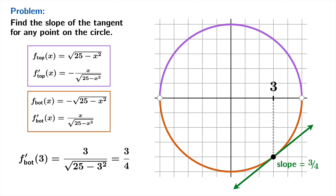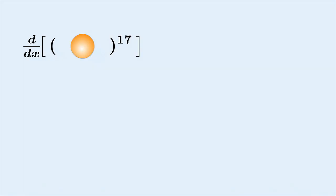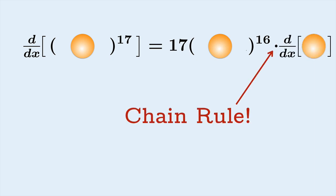Let's take a short diversion. Suppose you need to find the derivative with respect to x of some 'blob' raised to the 17th power. By the power rule that's 17 times blob to the 16th, but since the blob might be a function of x, the chain rule says we multiply by the derivative of the blob with respect to x. We have no reason to believe the blob isn't a function of x, so that's what we do.